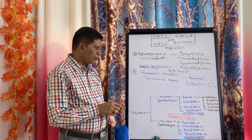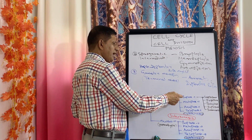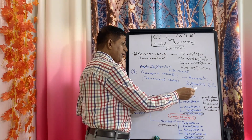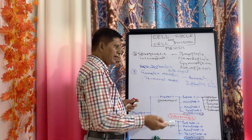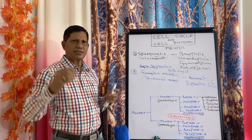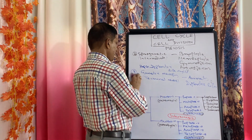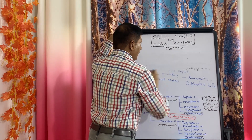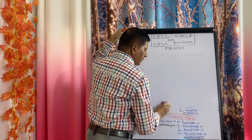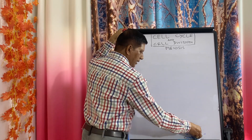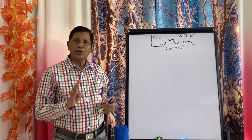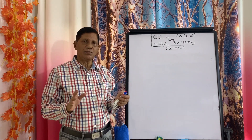Now we will start Meiosis 1. In Meiosis 1 there is prophase 1, and prophase 1 is the longest stage. It is divided into five sub-stages: leptotene, zygotene, pachytene, diplotene, and diakinesis. If you can understand prophase 1, metaphase 1, and anaphase 1, you know 95% of meiosis. These three stages are very, very important.